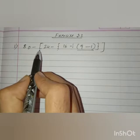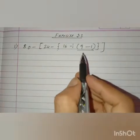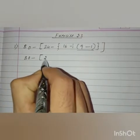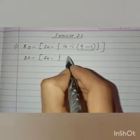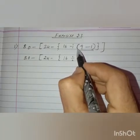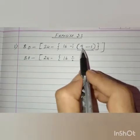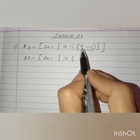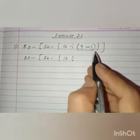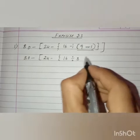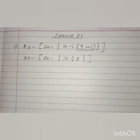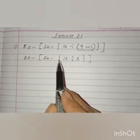Let us solve. Write down: 80 minus big bracket 24 minus curly bracket 16 divided by — to remove this common bracket or normal bracket, we have to do the operation given in the bracket. Here they have given subtraction, so 9 minus 1 is 8. Curly bracket close, big bracket close.